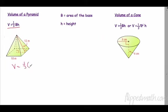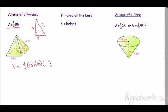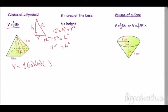So we're going to do one-third times the area — this is 10 times 10 — times the height. We have to find the height using the Pythagorean theorem. That slant is 12, and if this whole base is 10, then the half-base is 5. So 12 squared minus 5 squared equals h squared. H squared equals 119, so our h is the square root of 119.